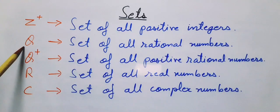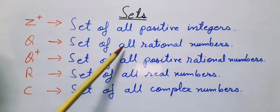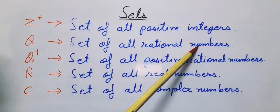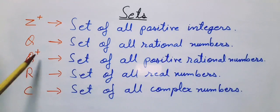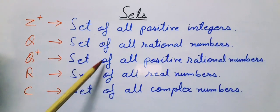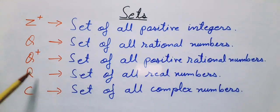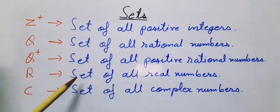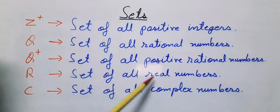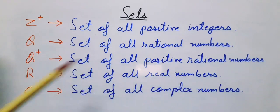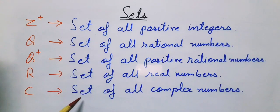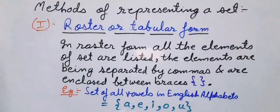Q stands for set of all rational numbers. Q+ stands for set of all positive rational numbers. Capital R stands for set of all real numbers, and capital C stands for set of all complex numbers.